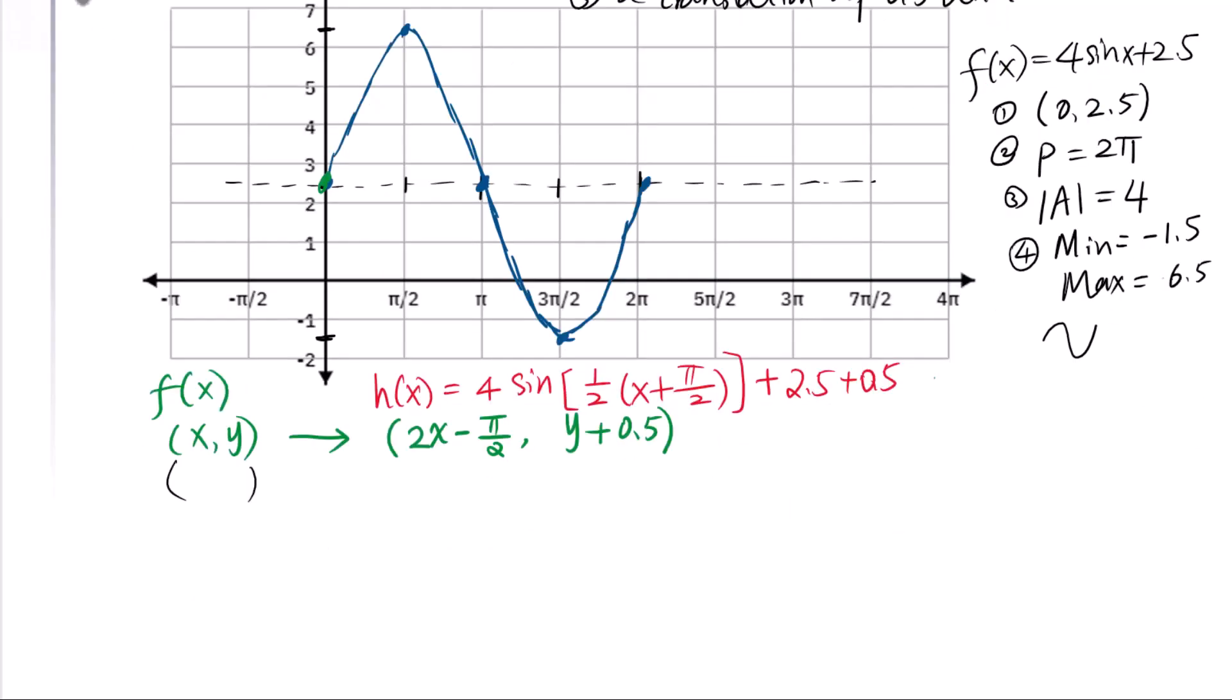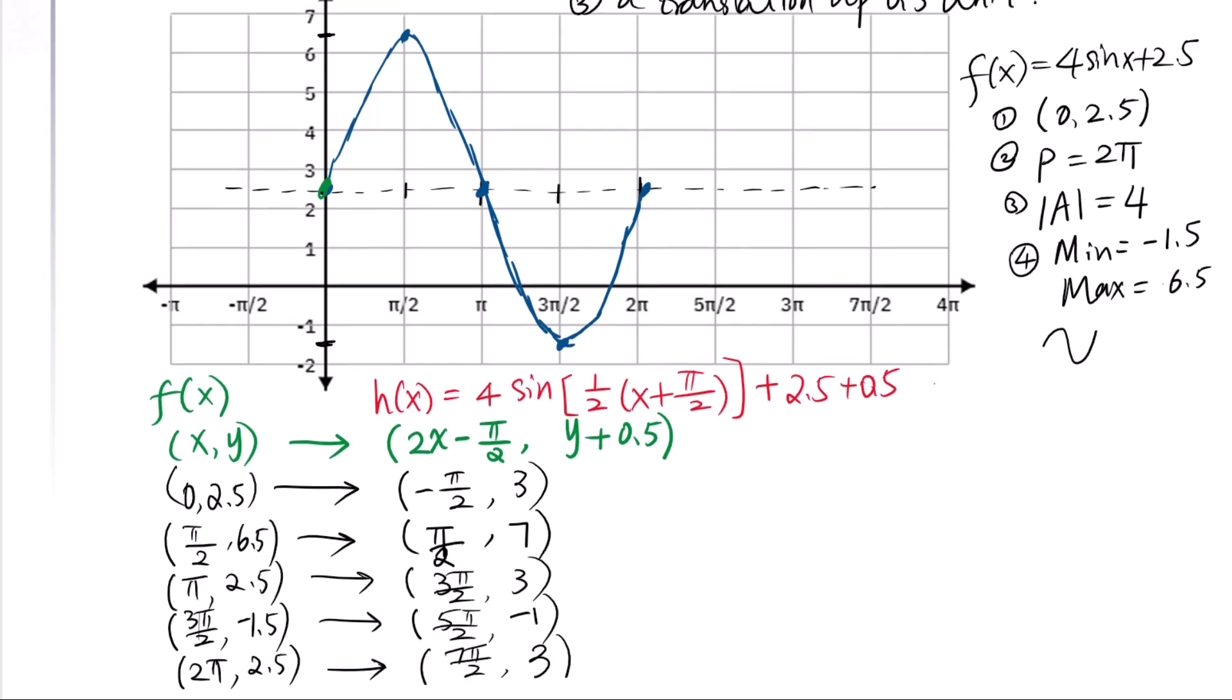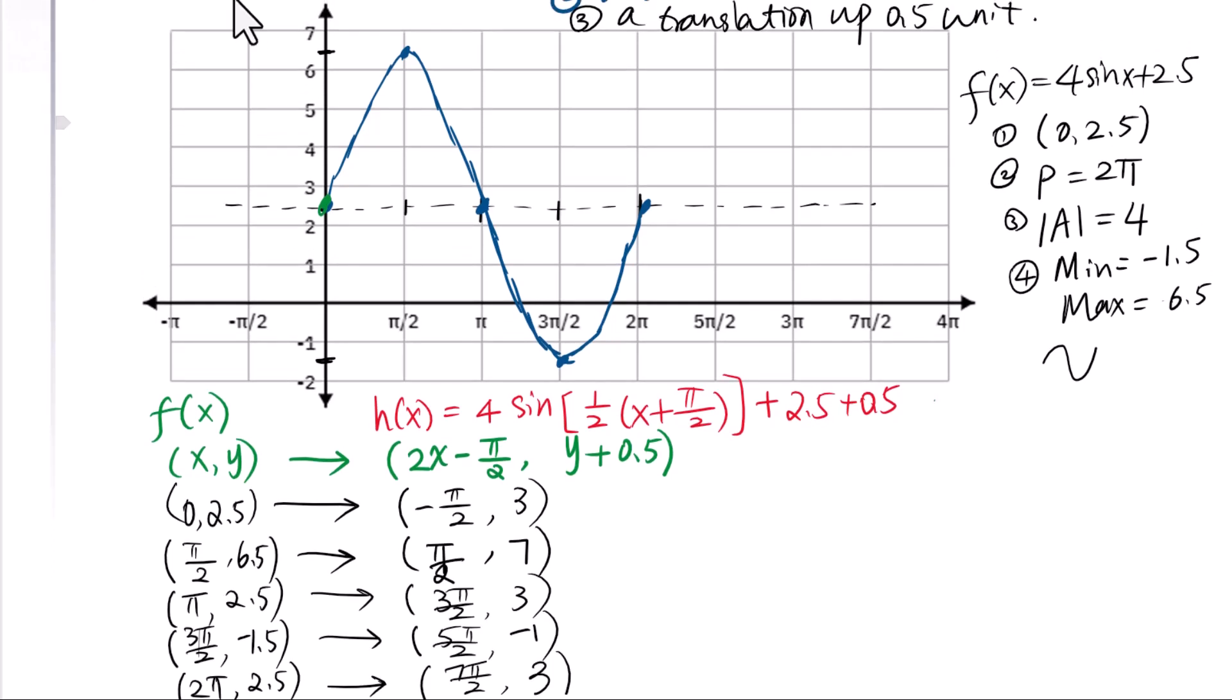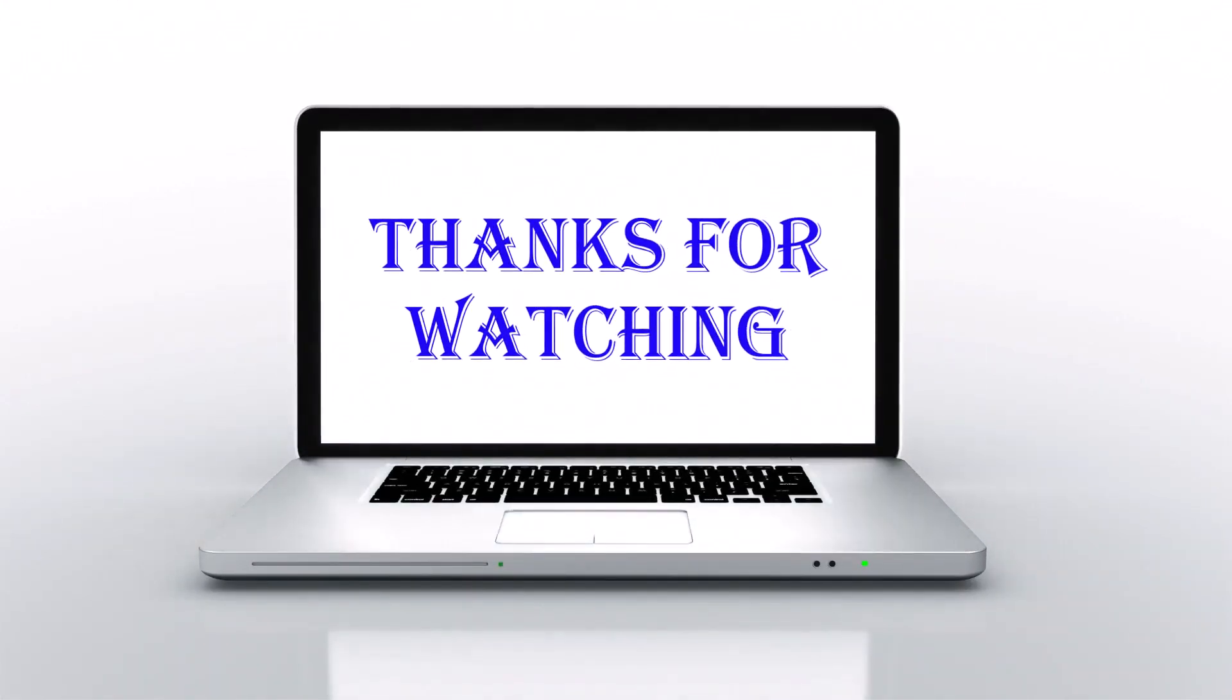Let's find 5 critical points. Then we will apply 2x - π/2 for x-coordinate and y + 0.5 for y-coordinate. Now let's plot all the transformed coordinates. Then connect these 5 points. Thank you.